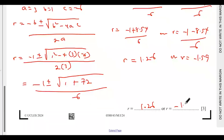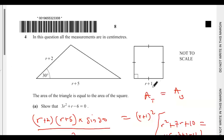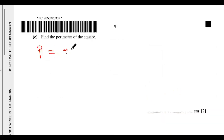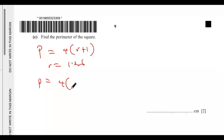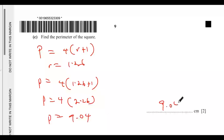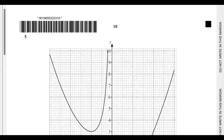Part c: find the perimeter of the square. The perimeter equals 4 times (r + 1). Since a side length cannot be negative, we use r = 1.26. So the perimeter = 4 × (1.26 + 1) = 4 × 2.26 = 9.04 centimeters. That is the end of the solution to question four. In the next video I'll solve question five.